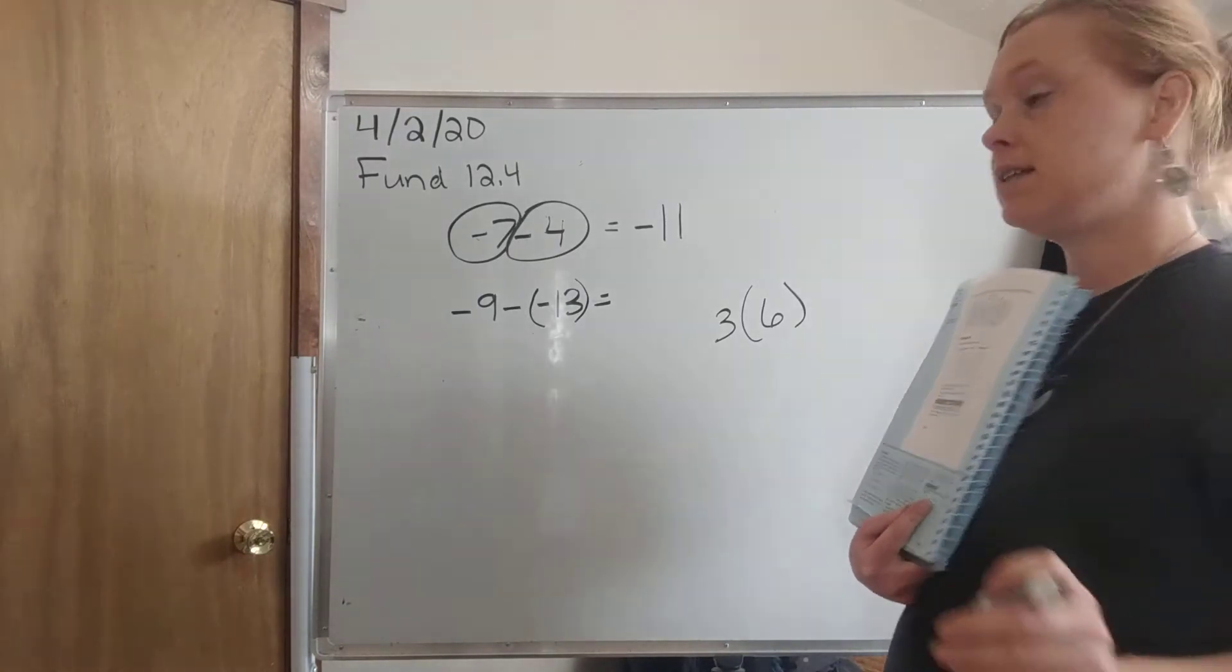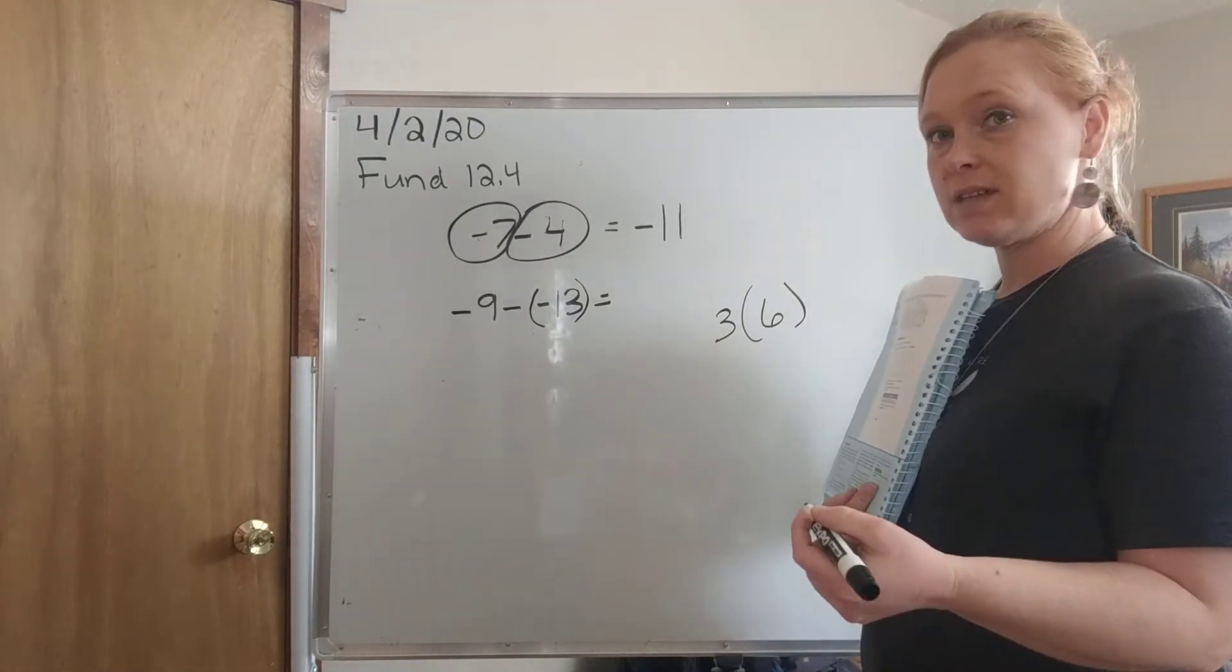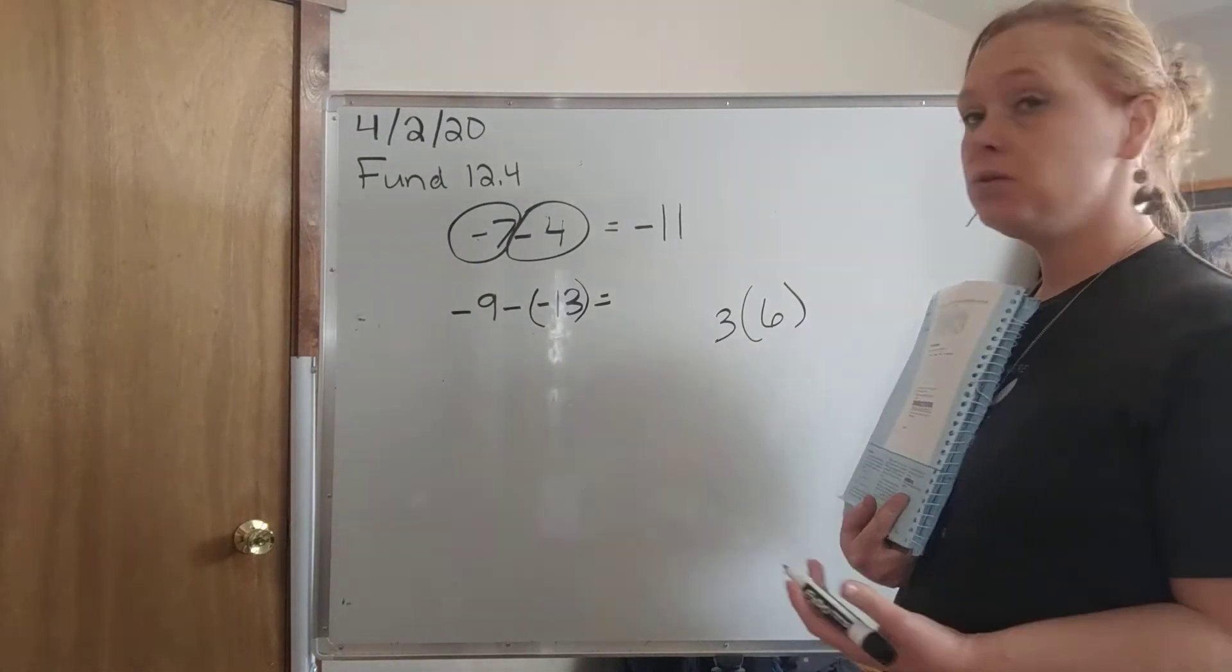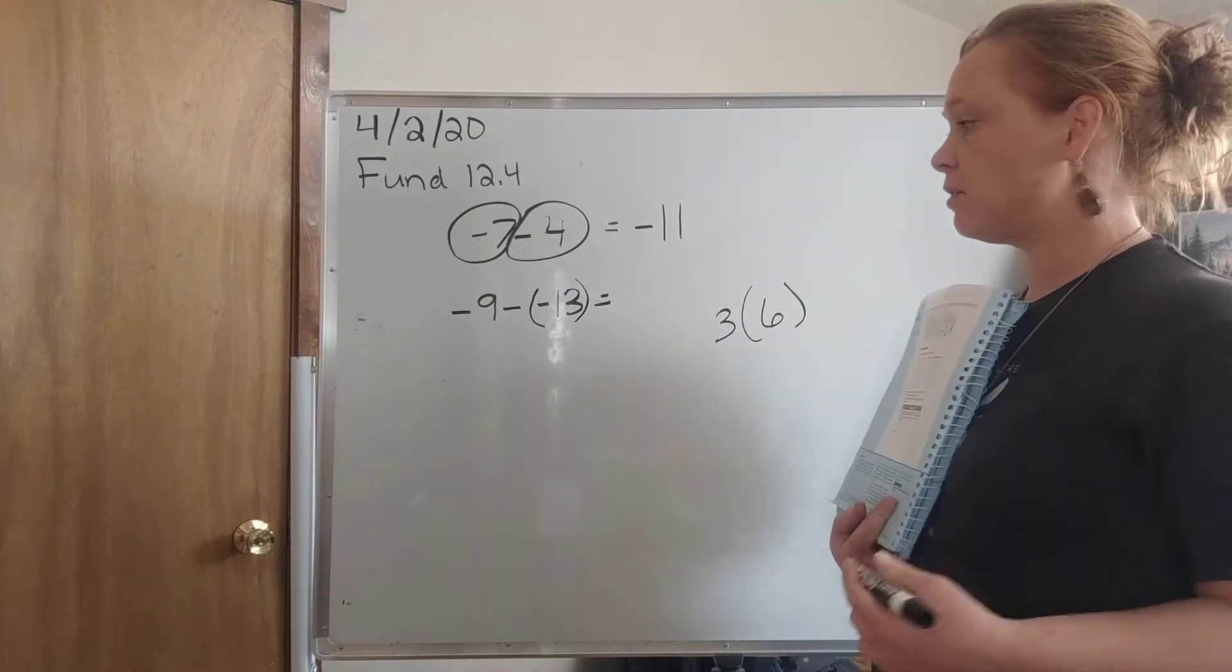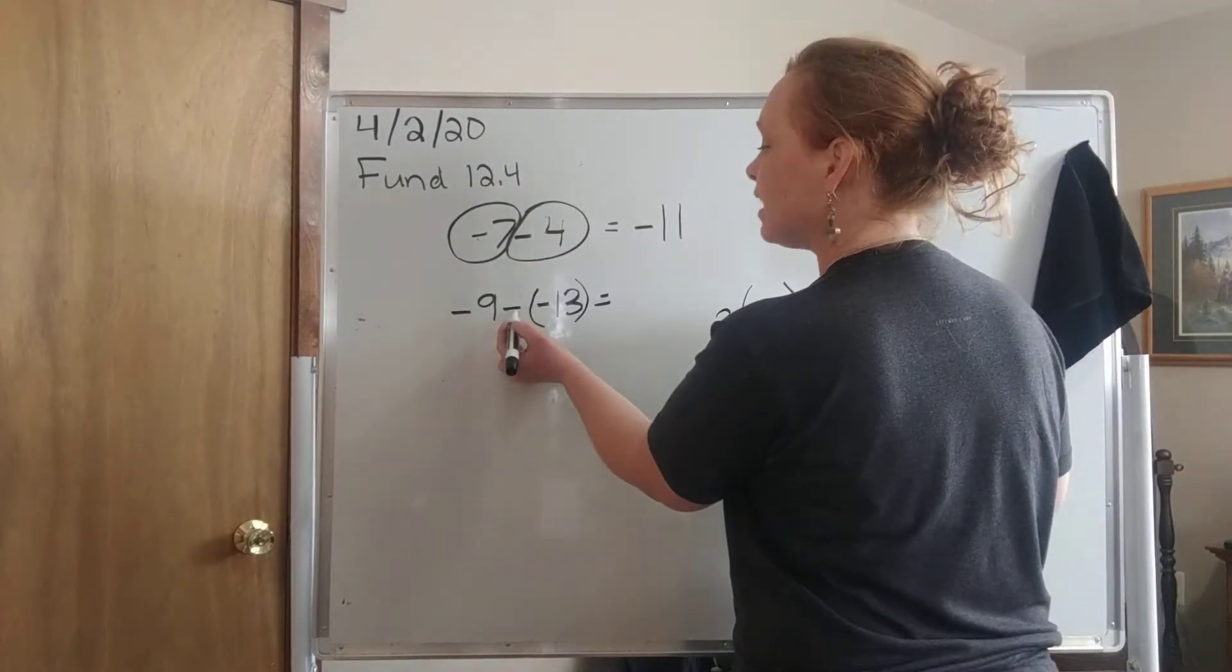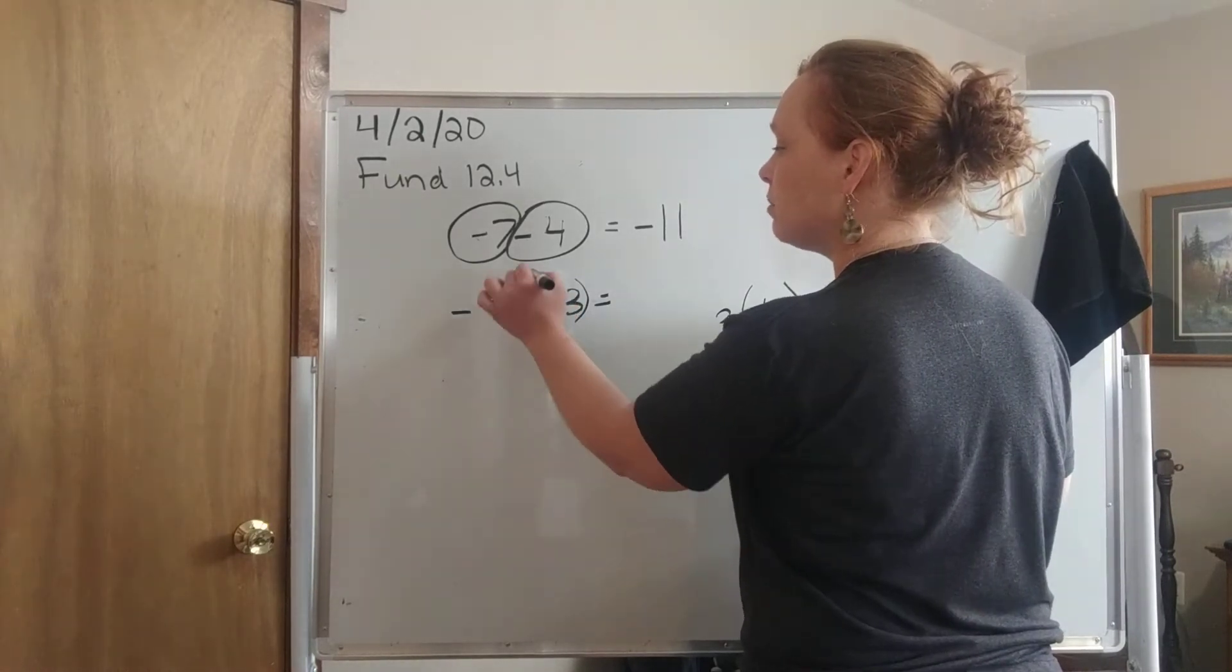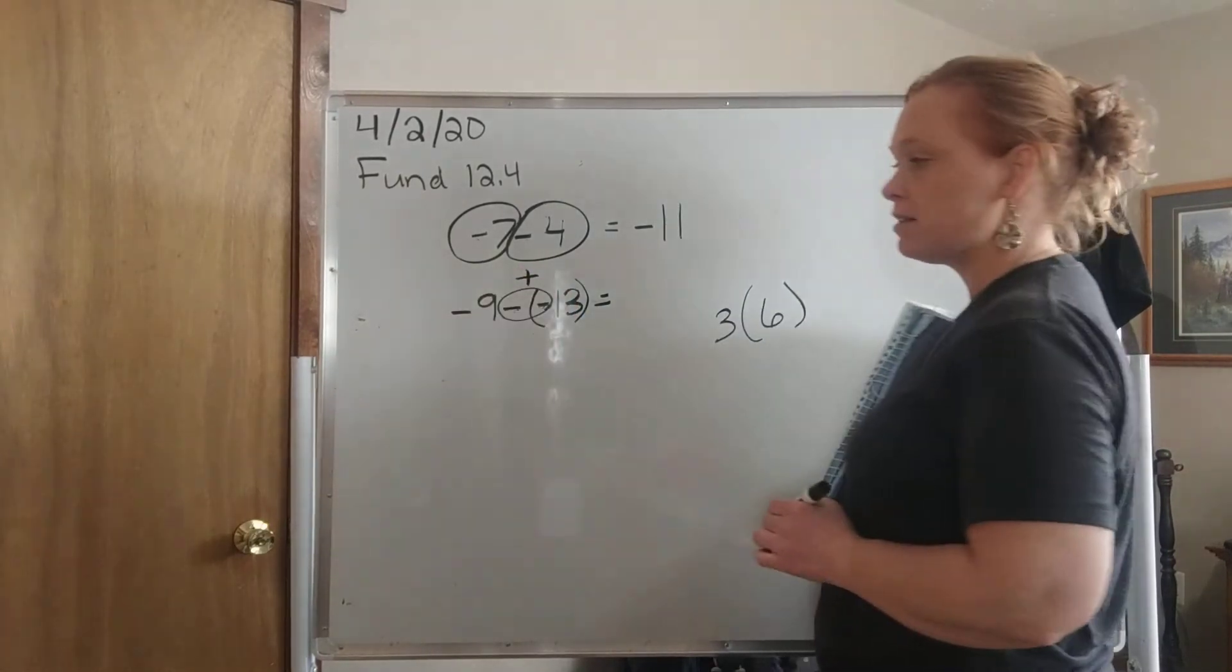We will learn later, and it's something I want you to learn now, that when I multiply two negatives, I get a positive. Two negatives make a positive. Say that with me. Two negatives make a positive. So when my negative signs are right next to each other like that, I'm going to circle them and I'm going to change it to a positive.